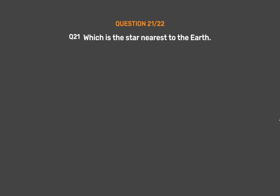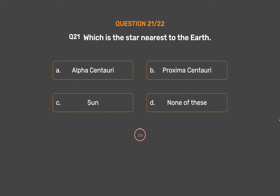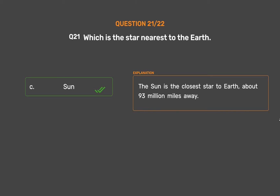Question number 21. Which is the star nearest to the Earth? Option A: Alpha Centauri. Option B: Proxima Centauri. Option C: Sun. Option D: None of these. The correct answer is Option C: Sun. The sun is the closest star to Earth, about 93 million miles away.